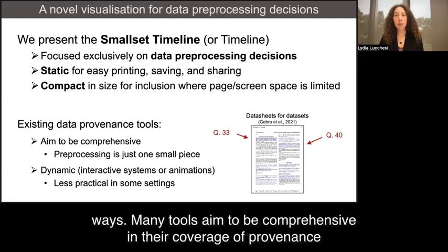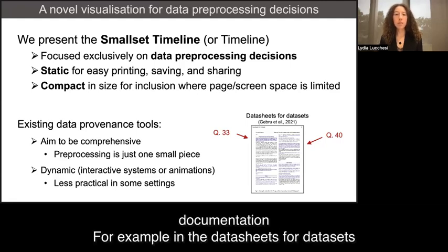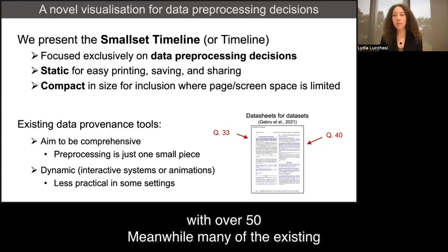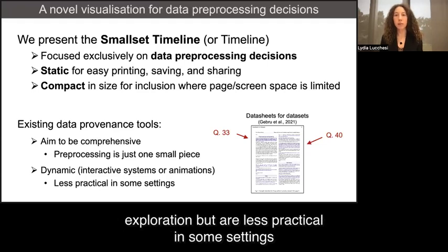It's unique from existing data provenance tools in several ways. Many tools aim to be comprehensive in their coverage of provenance, so pre-processing ends up being just one small part of the documentation. For example, in the Data Sheets for Datasets template, pre-processing is referenced in several questions in a template with over 50. Meanwhile, many of the existing visualization tools are complex interactive systems, which can be great for exploration but are less practical in some settings.